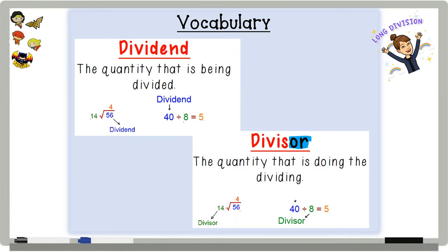So if I say 40 divided by 8, that's saying that 8 is the one that's doing the dividing. So 8 is my divisor.